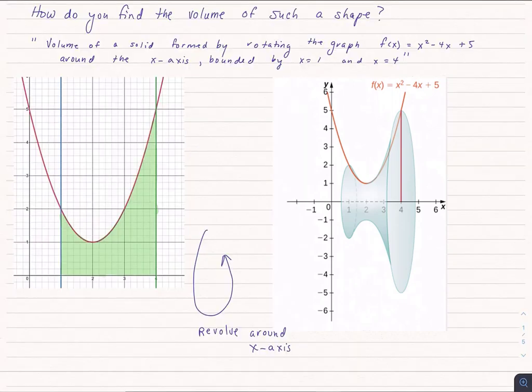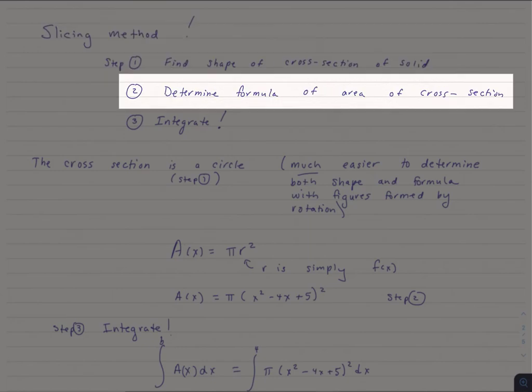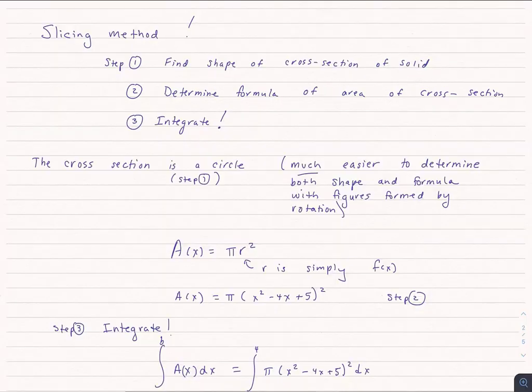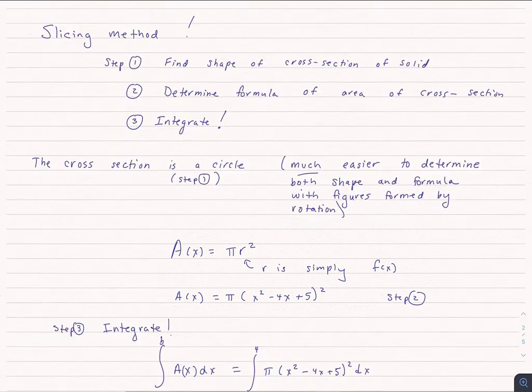Circles are pretty nice because we know the area of that circle. So the shape is a circle. The next thing we need to do is find the formula of that circle. Well not only is it nice that the area is a circle, but we also know that the radius is always going to be the function that we're using to generate this shape.